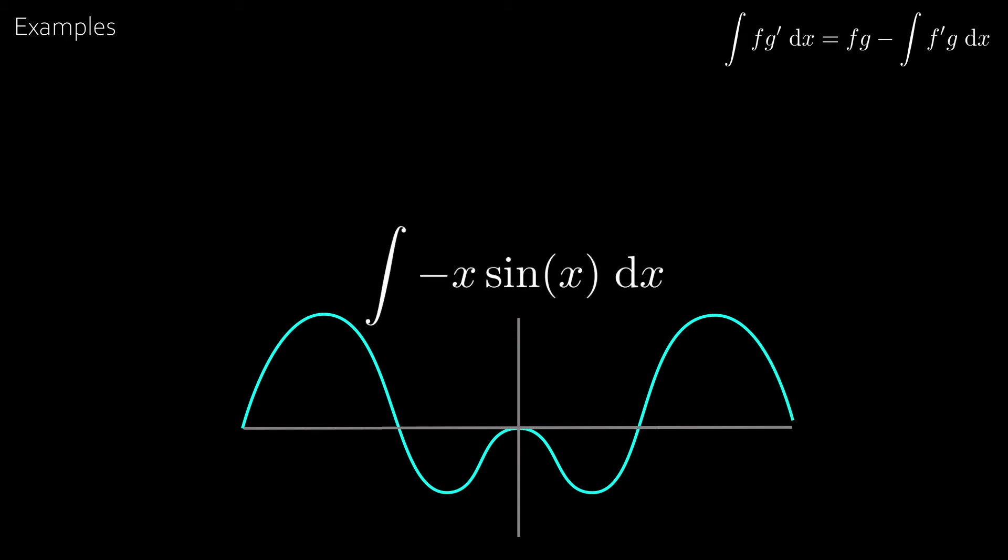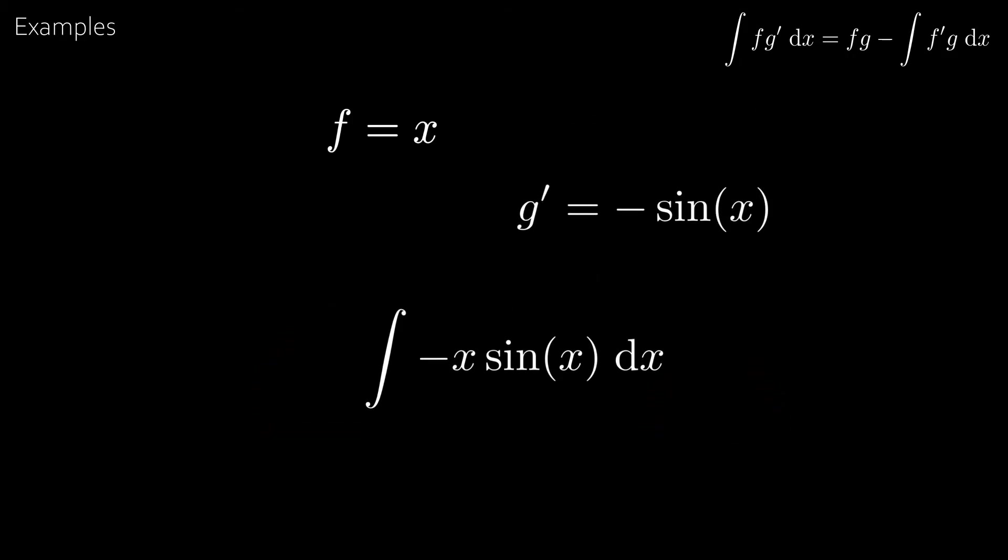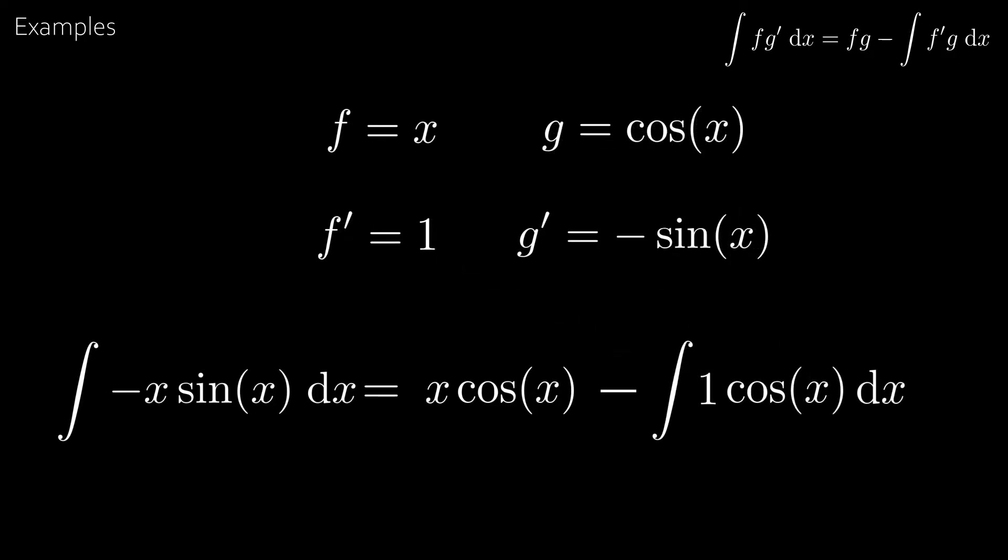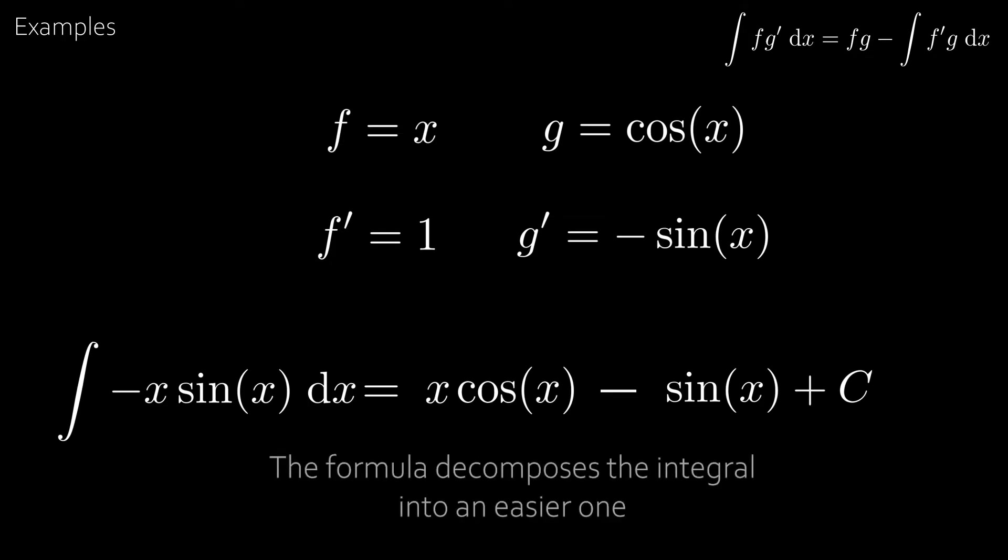So for example take the integral of minus x sin x. Let's take f equal to x and g dash equal minus sin x. Then the derivative of f is equal to 1 and g which is the integral of g dash is cos x. And normally here we would write plus c. But integration by parts is actually quite special and you don't need to write plus c here and we will explain why later in the video. So then by the formula we get the minus integral of x sin x is fg or x cos x minus the integral of f dash g or the integral of 1 times cos x which is just the integral of cos x which is minus sin x plus c. And this is the answer to the integral. So essentially the formula decomposes the integral into an easier integral which you can compute.